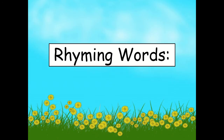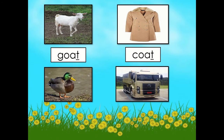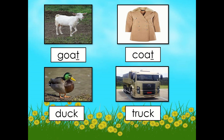Next let's have rhyming words. When we say rhyming words, these are words that have the same ending sound. For example, 'goat' and 'coat' — take note, the words goat and coat have the same ending sound, which is the T sound or the sound of the letter T. Next we have 'duck' and 'truck'. Duck and truck have the same ending sound, which is the K sound or the sound of the letter K.